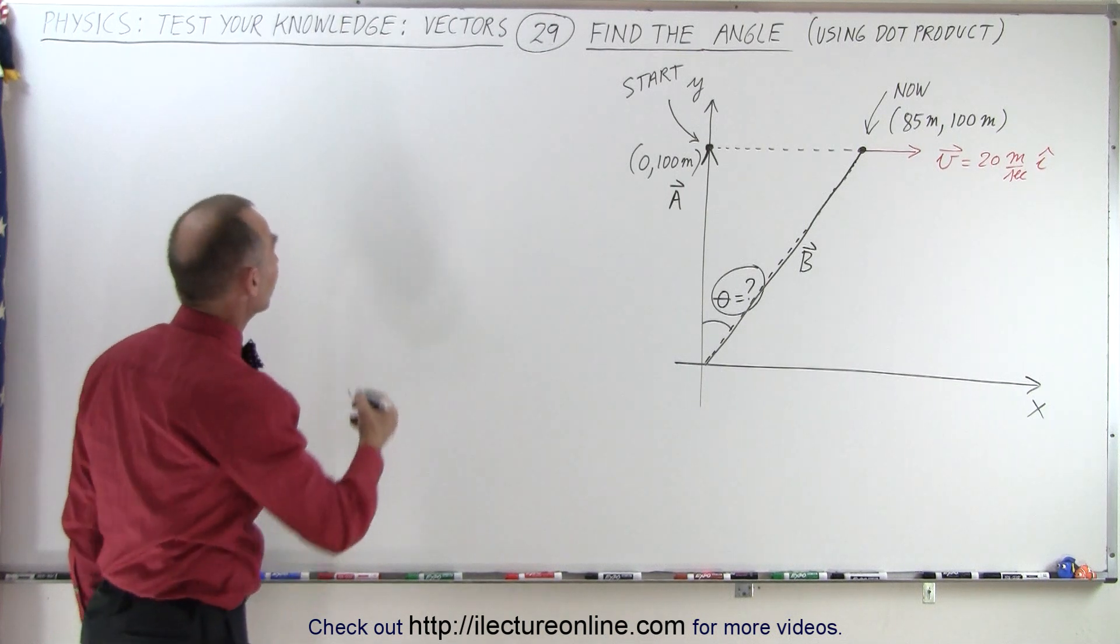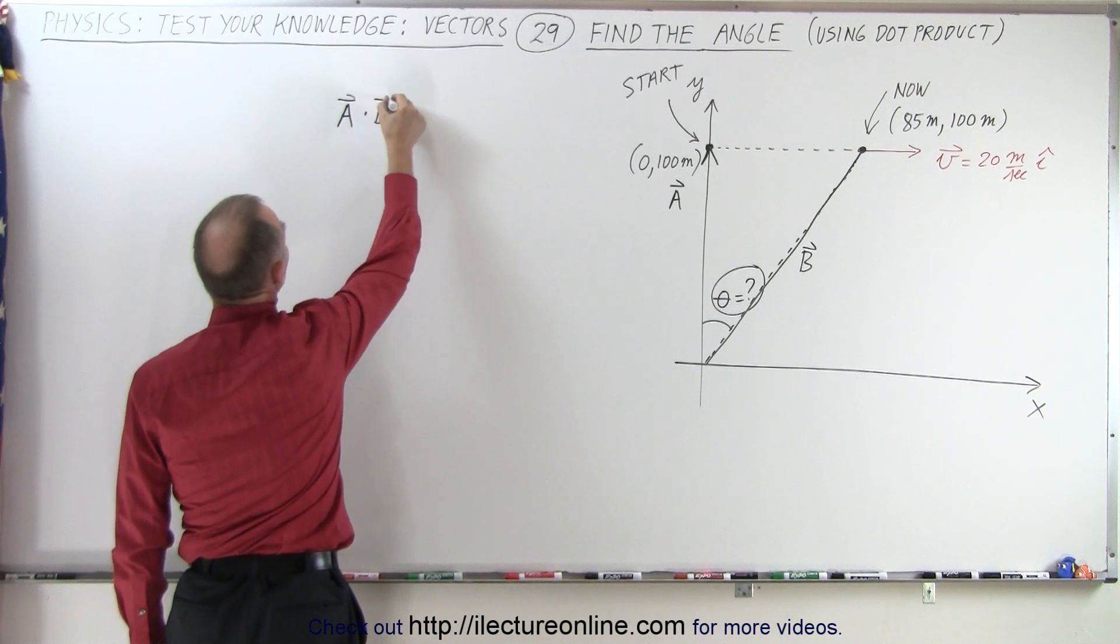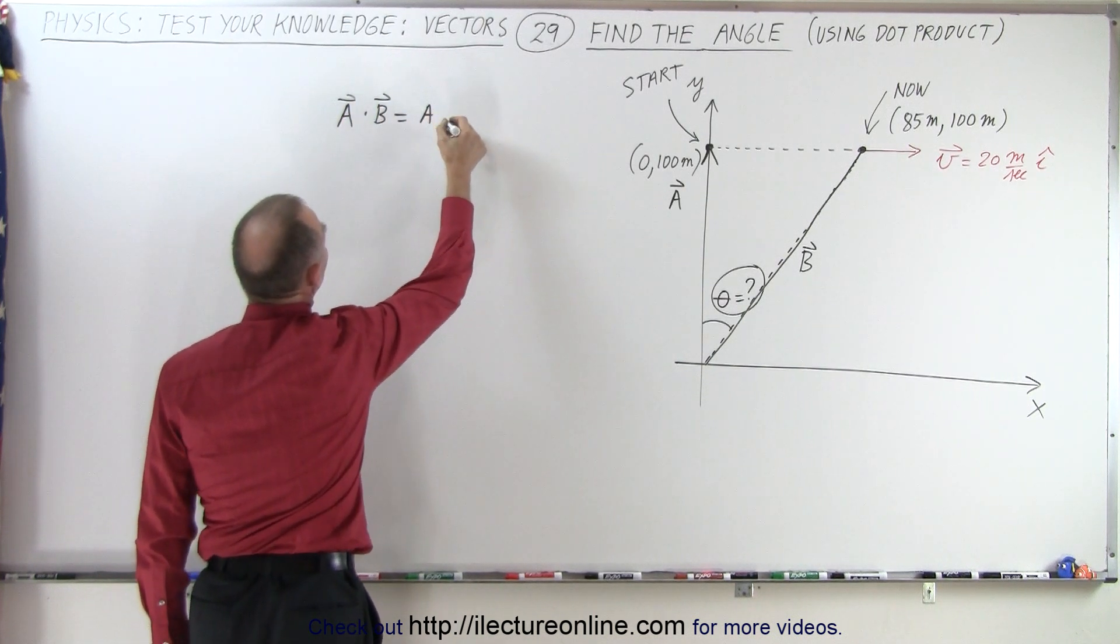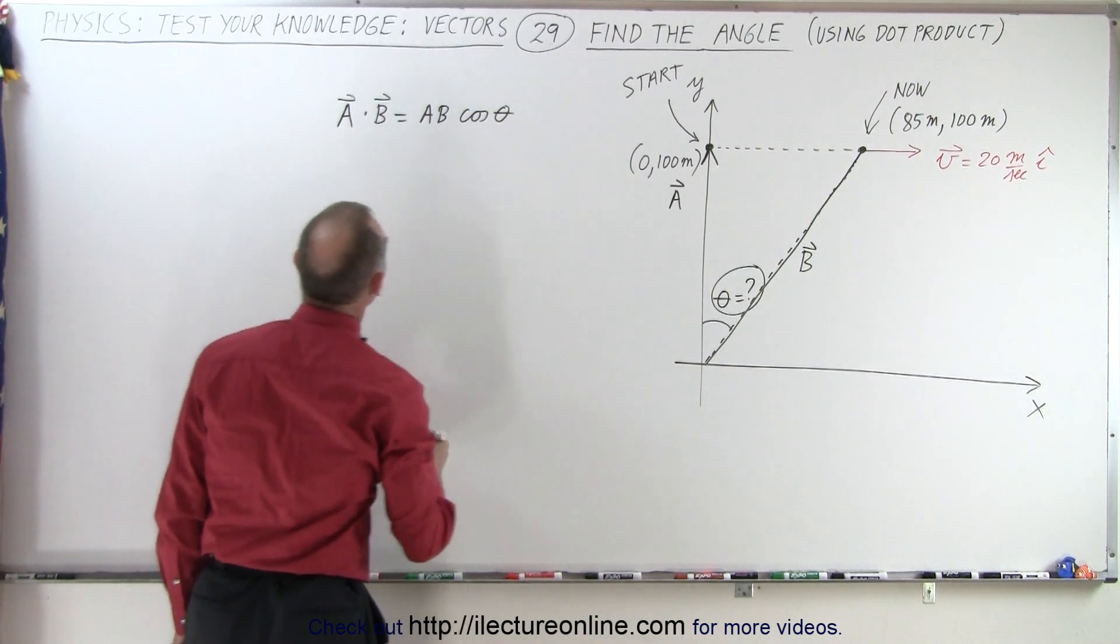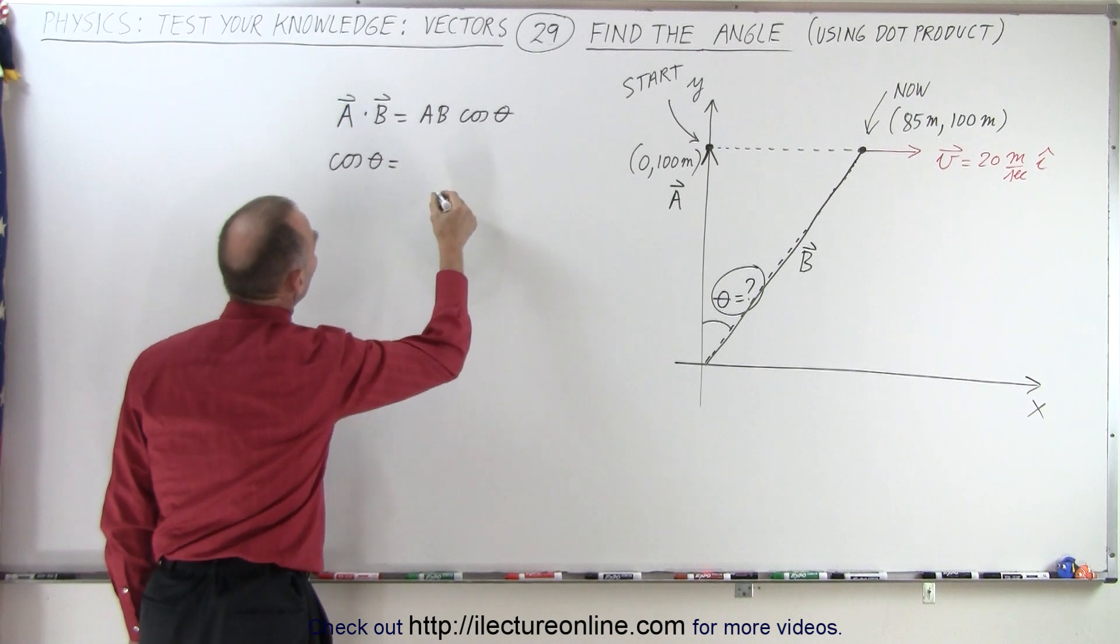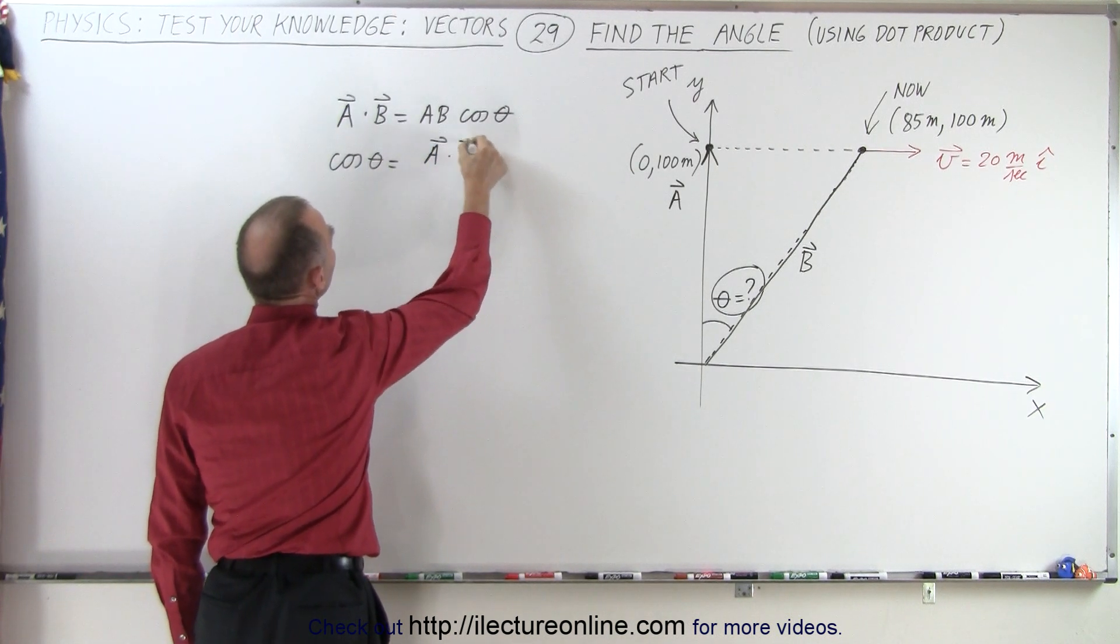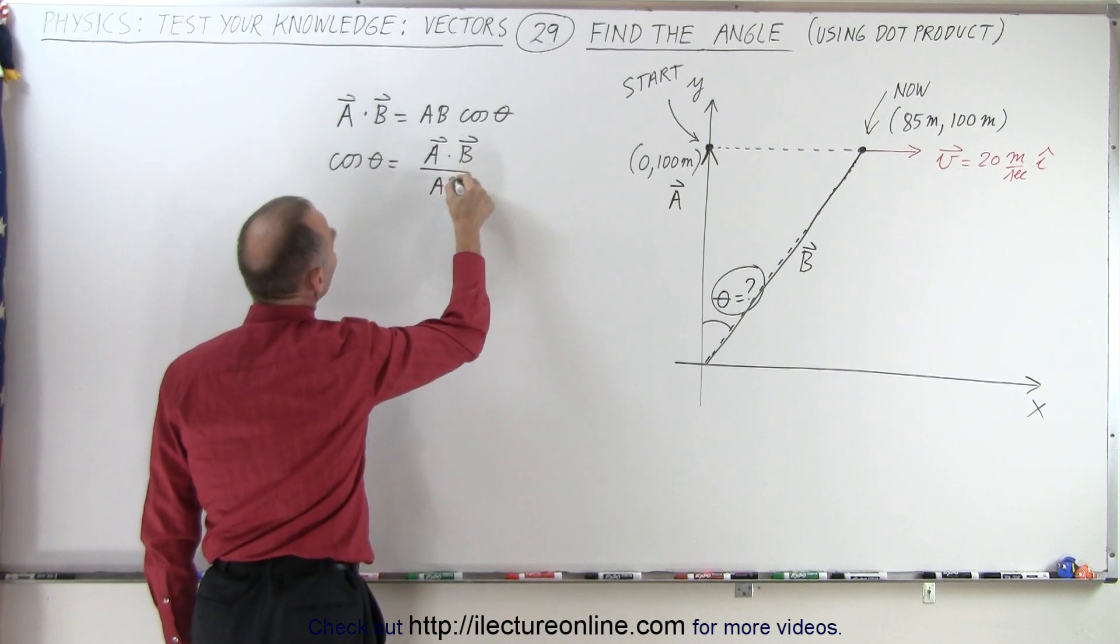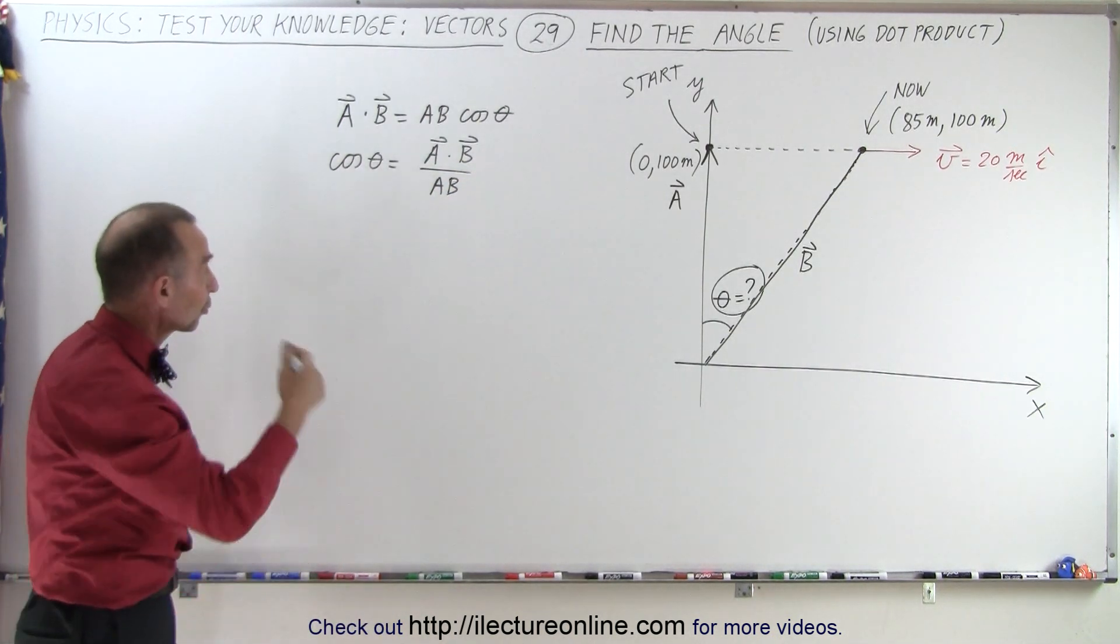So what we can do now is write that the dot product a dot b is equal to the magnitude of a times the magnitude of b times the cosine of the angle between them, which means that cosine of theta is equal to the dot product a dot b divided by a times b, which is the magnitude of a times the magnitude of b. And then, of course, we take the inverse cosine of that.